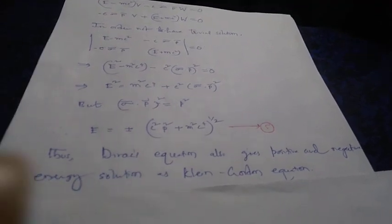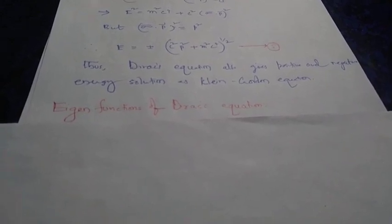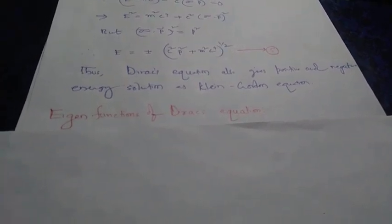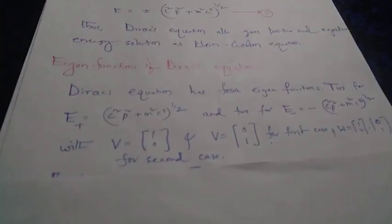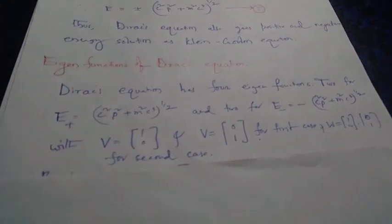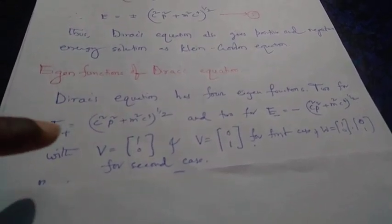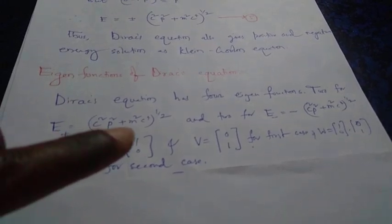Next we find the eigenfunctions for both positive and negative eigenenergies for the free particle using Dirac's equation. Dirac's equation will have four eigenfunctions: two of them for the positive energy E+ = +√(c²P² + m²c⁴).